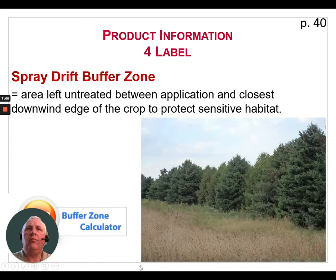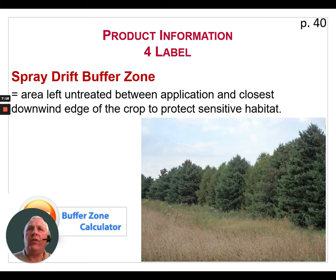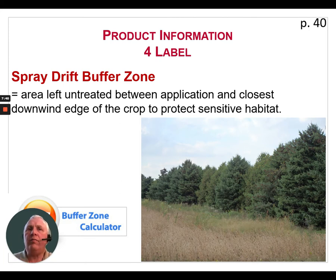The next item on a pesticide secondary label is the spray drift buffer zone. This is an area left untreated between the application site and the closest downwind edge of the crop, to protect sensitive habitat. That sensitive habitat could be water, meadows, or forests, and different distances may be required for each type.